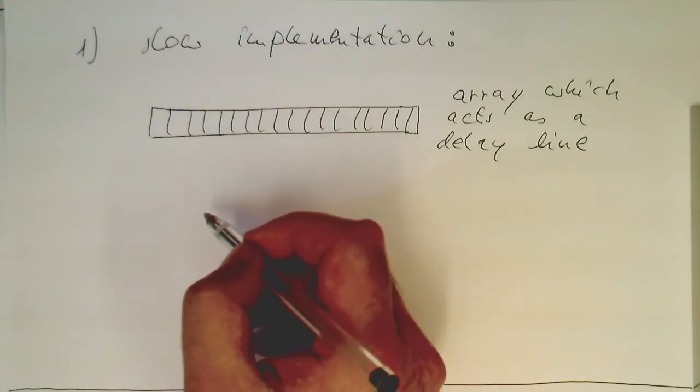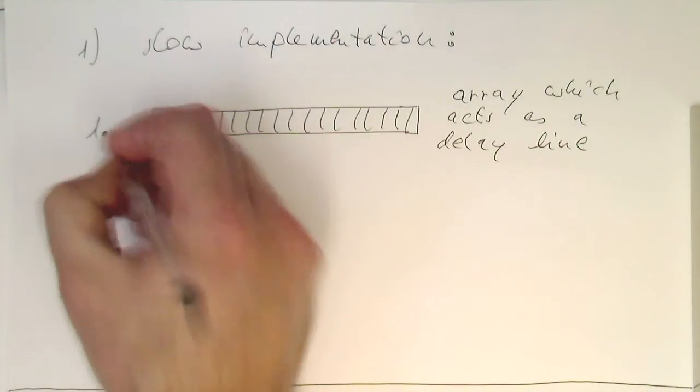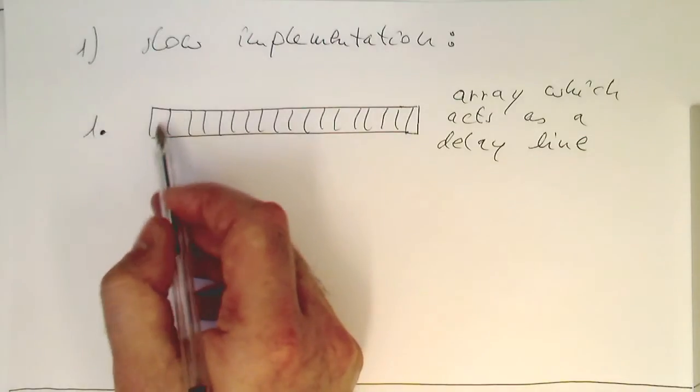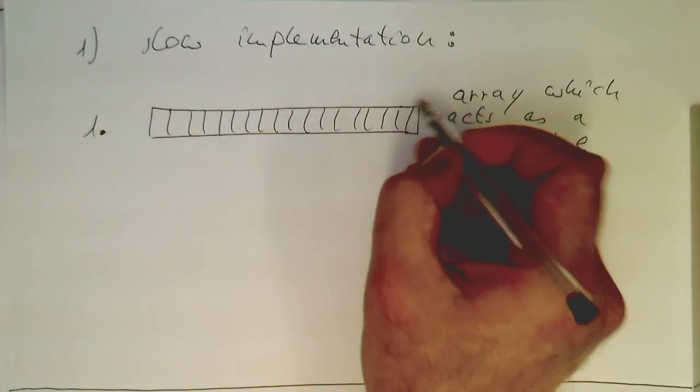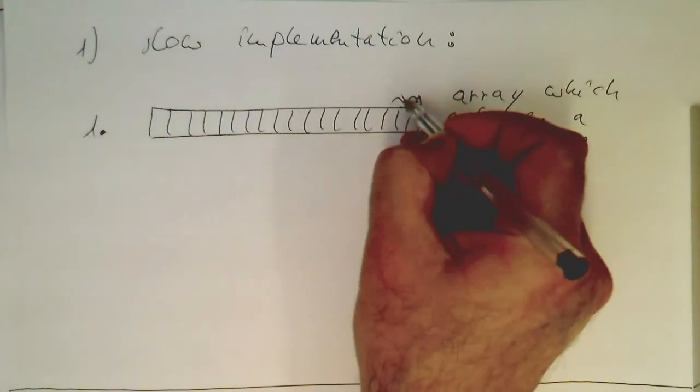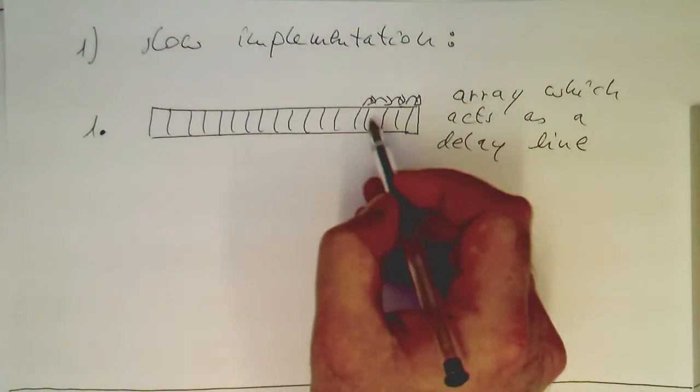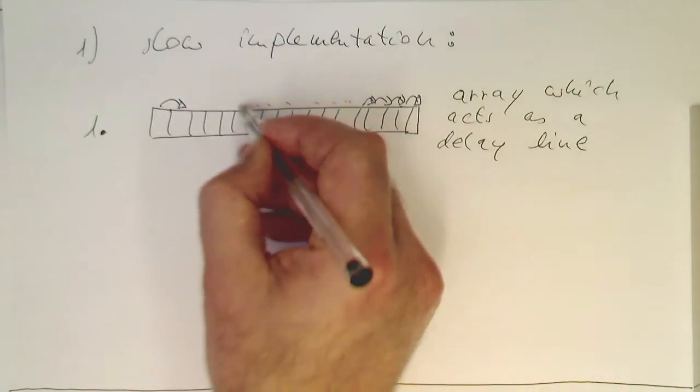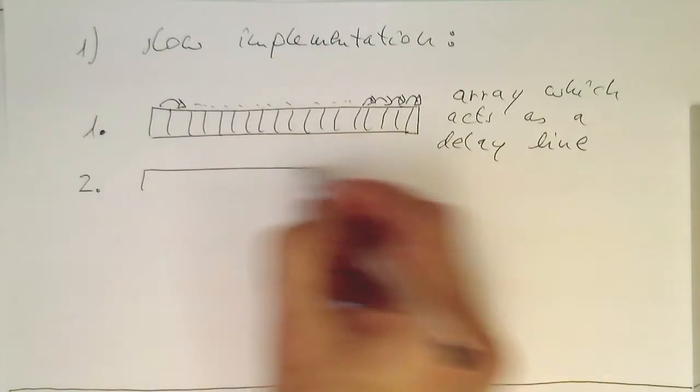So then we do it in two steps. The first step is, we just shift everything by one time step to make space here for a new sample. So what we do is, we just copy this in here, this in here, this in here, and so on. We're copying all these elements over until we arrive at the first one to make some space here.